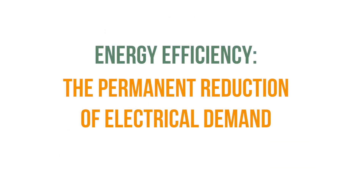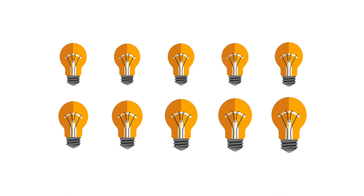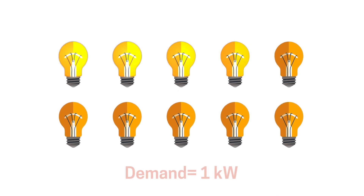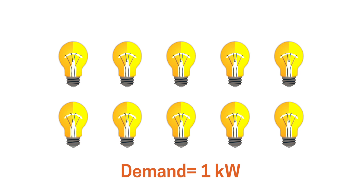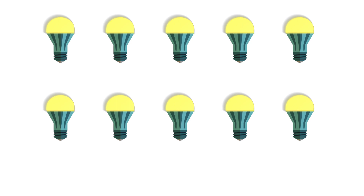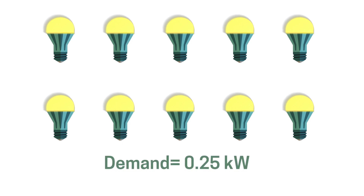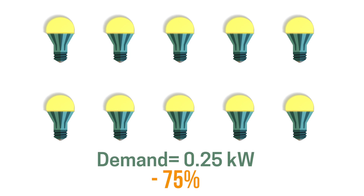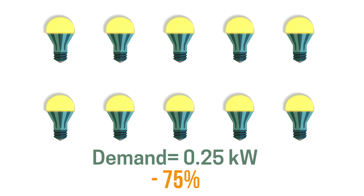Now let's return to our definition of energy efficiency—the permanent reduction of electrical demand. With energy efficiency, you reduce your electrical demand permanently, thereby reducing the amount of electricity the utility has to have constantly ready to meet your needs. Now imagine we replaced our bank of 10 100-watt light bulbs, which has a demand of 1 kilowatt, with 10 25-watt LED light bulbs, which have a total demand of 0.25 kilowatts. We've reduced our demand by 75 percent, saving us money on demand charges assessed by the utility, who has to be ready to meet our demand.